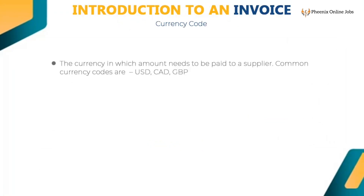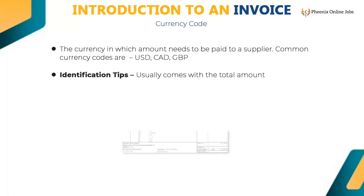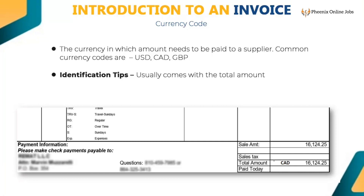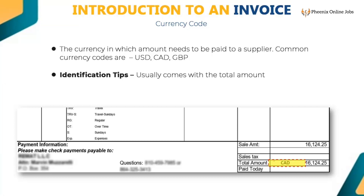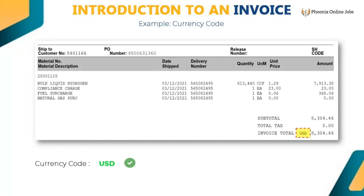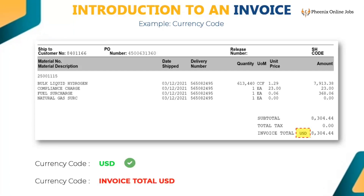Currency is what the amount needs to be paid in to the supplier — for example, USD, CAD, GBP. These occur as a three-digit alpha code or as a symbol (dollar or euro). It usually comes with the total amount. Key only the currency code mentioned on the invoice — USD, GBP, CAD, INR, etc. Do not key any numeric amount value or keywords like 'total' or 'amount.'